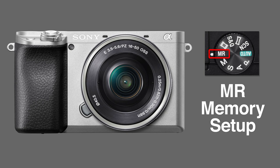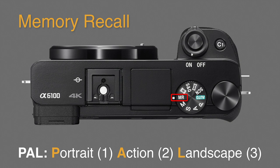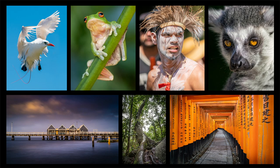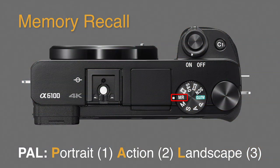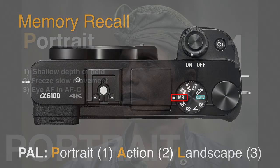Before we can recall the memories, we need to program them into the camera. I've been using a system of programming memories for portrait, action, and landscape, and I can pretty much start from any of those three starting points and then make minor modifications as I'm choosing. I refer to this workflow as PAL — Portrait Action Landscape.